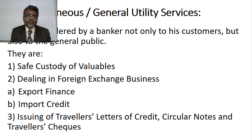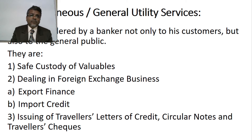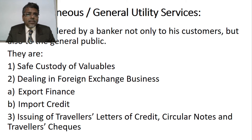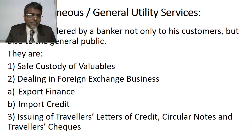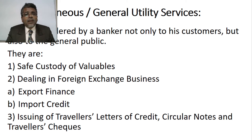The first general utility service is safe custody of valuables. People have valuables such as title deeds of property, records and documents of assets, jewelry, ornaments, or scientific formulas. If the customer wants to keep these safely, the banker will allow it through a safe custody deposit facility or safe custody vault facility.